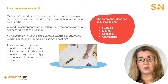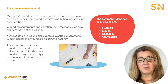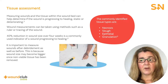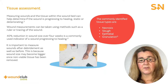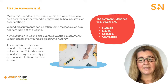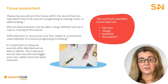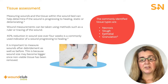Wound measurements with a ruler or wound tracing typically capture the greatest length and width of the wounds. These measurements can be documented and reviewed regularly as part of an ongoing wound assessment. Commonly identified tissue types are necrosis, slough, and epithelial or granulating tissue. Identifying and documenting these tissue types and the percentage of tissue affected can help determine if the treatment plan is working.